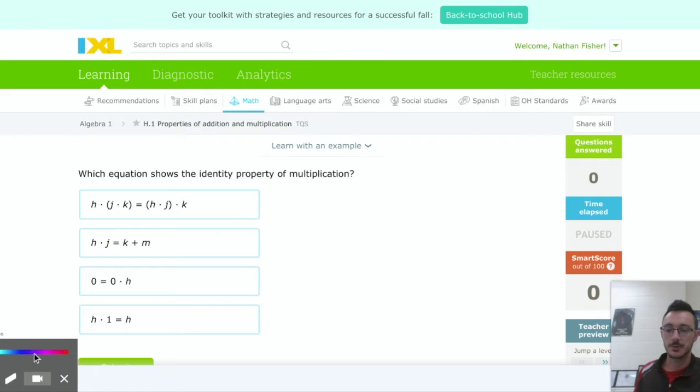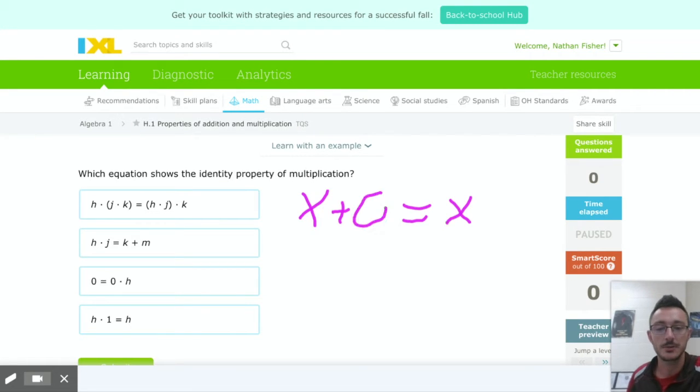Identity is basically any time we are getting the original thing back as the number. So we'll write on here, let's go with a purple color. With addition, what that would look like with an identity is like a number, so like x, we're going to add something to it and we want to get that thing back.